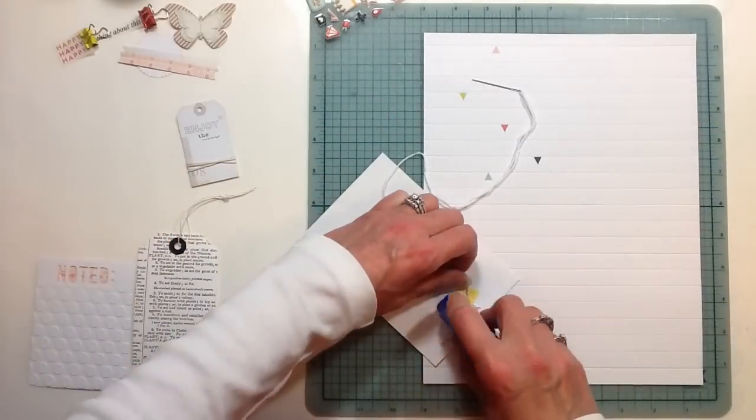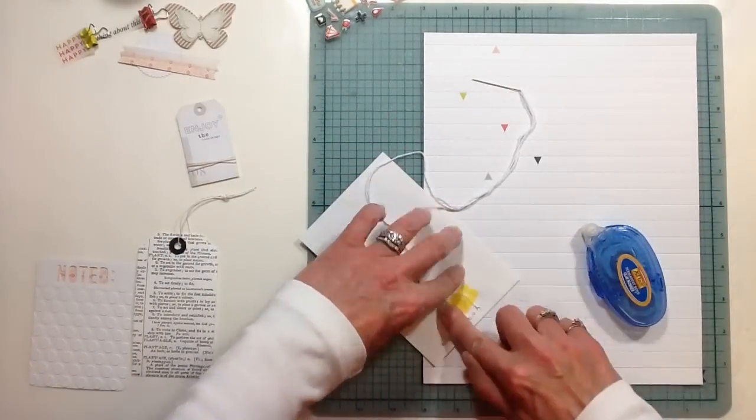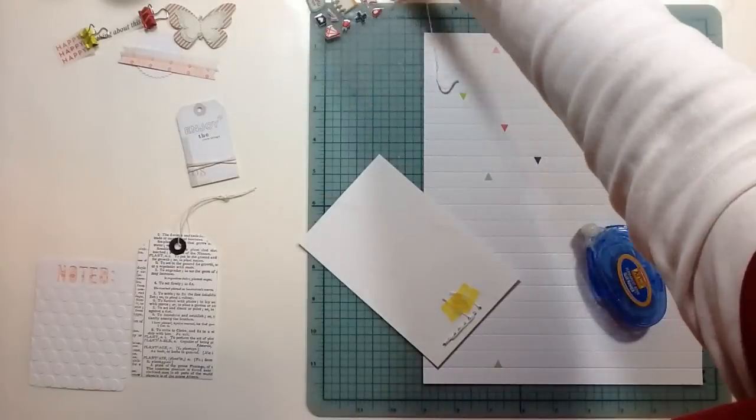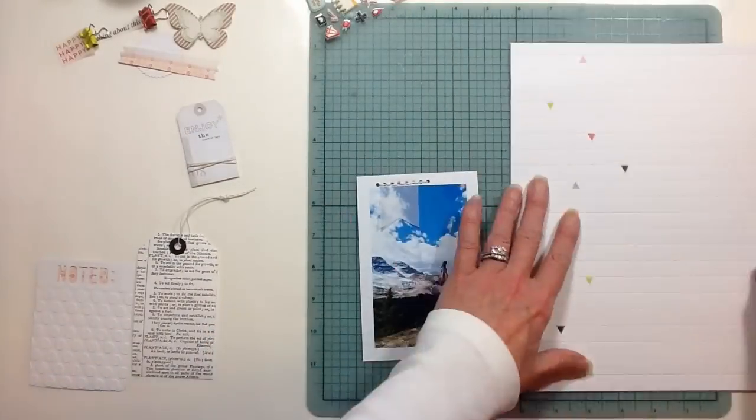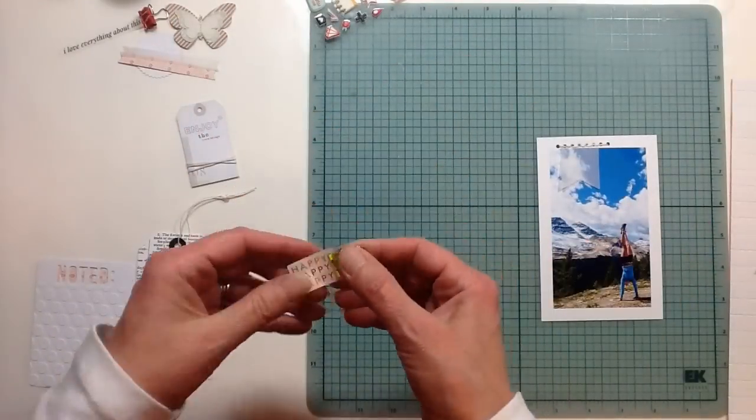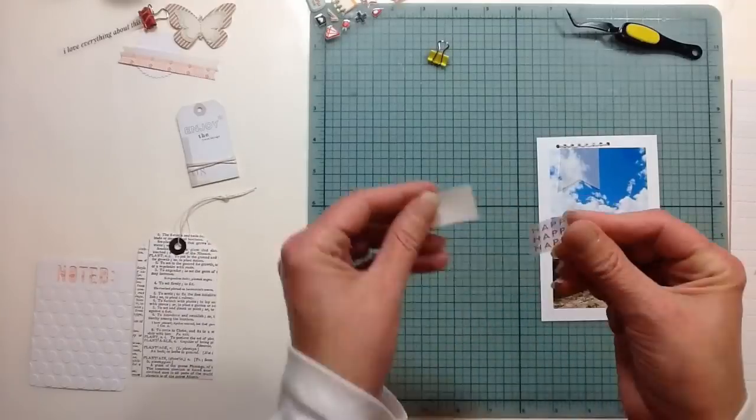I'm just going to get that all stitched down. I put a little bit of adhesive and then put the floss down and then tape the end down with washi tape.